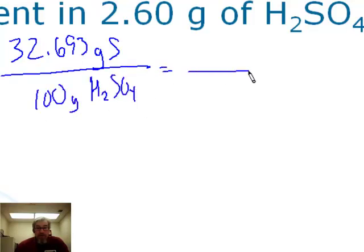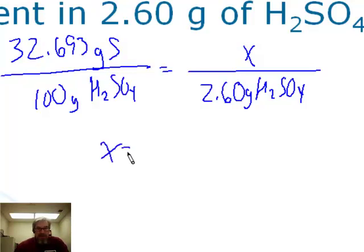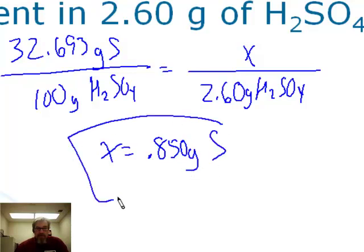As a proportion: if we have 2.60 grams of H₂SO₄, X grams of sulfur would be present. We find the answer by cross-multiplying and dividing, and X turns out to be 0.850 grams of sulfur.